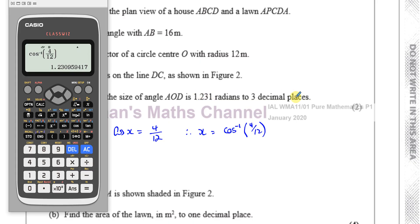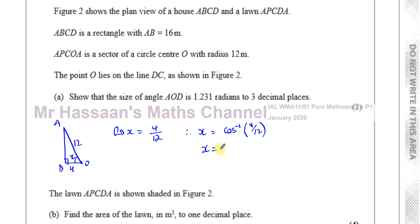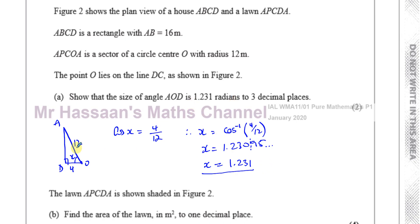When it says 'show that' something equals a value to a certain number of decimal places, it's best to show it first to a higher degree of accuracy and then show that it rounds. So 1.23095... rounds to three decimal places as 1.231, which is exactly what we had to show. You need to show the cosine ratio steps — you can't just write the answer down.